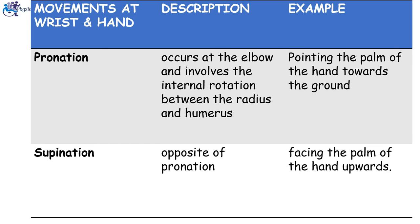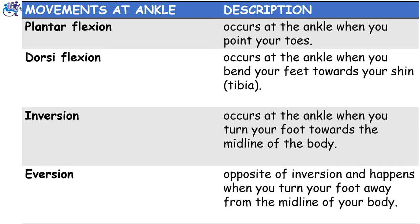Wrist and hand movements include pronation and supination. Pronation occurs at the elbow and involves the internal rotation between the radius and humerus — for example, when you are pointing the palm of the hand towards the ground. Supination is just opposite to pronation — when the palm faces upward. Movement at the ankle joint includes plantar flexion, dorsiflexion, inversion, and eversion. Plantar flexion occurs at the ankle when you point your toes. Dorsiflexion occurs at the ankle joint when you bend your feet towards your shin. Inversion occurs at the ankle when you turn your foot towards the midline of the body. Eversion is just opposite to inversion and happens when you turn your foot away from the midline of your body.